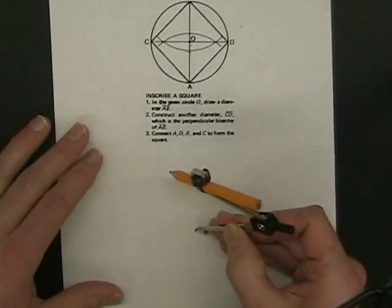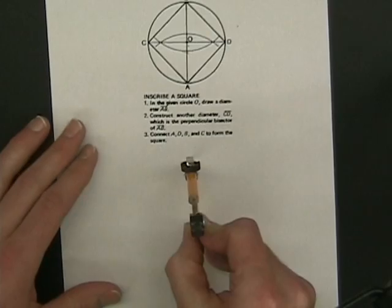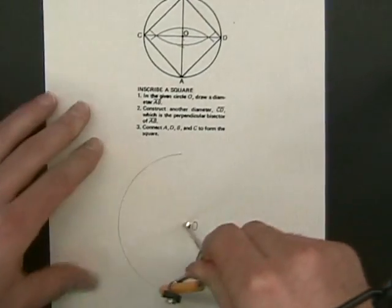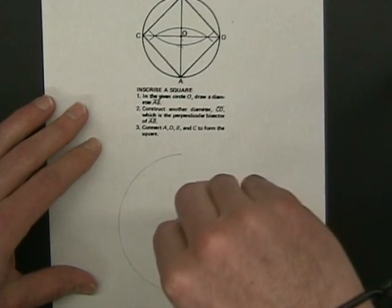Then with your compass, draw a circle with O as the center.